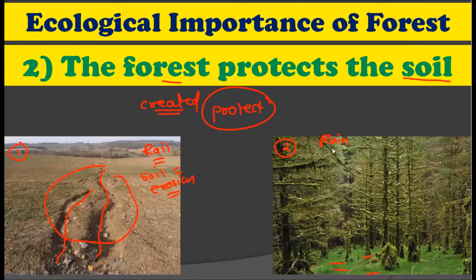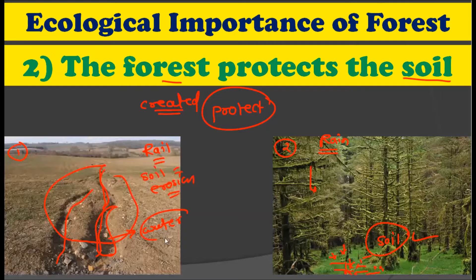But if such rain occurs in the forest, the rain does not come directly into contact with the ground. First it comes in contact with the grass present on the forest floor, and then drop by drop this water goes into the soil. This slow speed of water does not move the soil, so the soil remains in place. In the first picture, a large portion of soil is carried away by the water, but this cannot happen in the second picture because the forest plants act as an obstacle for the water, preventing runoff of both water and soil.